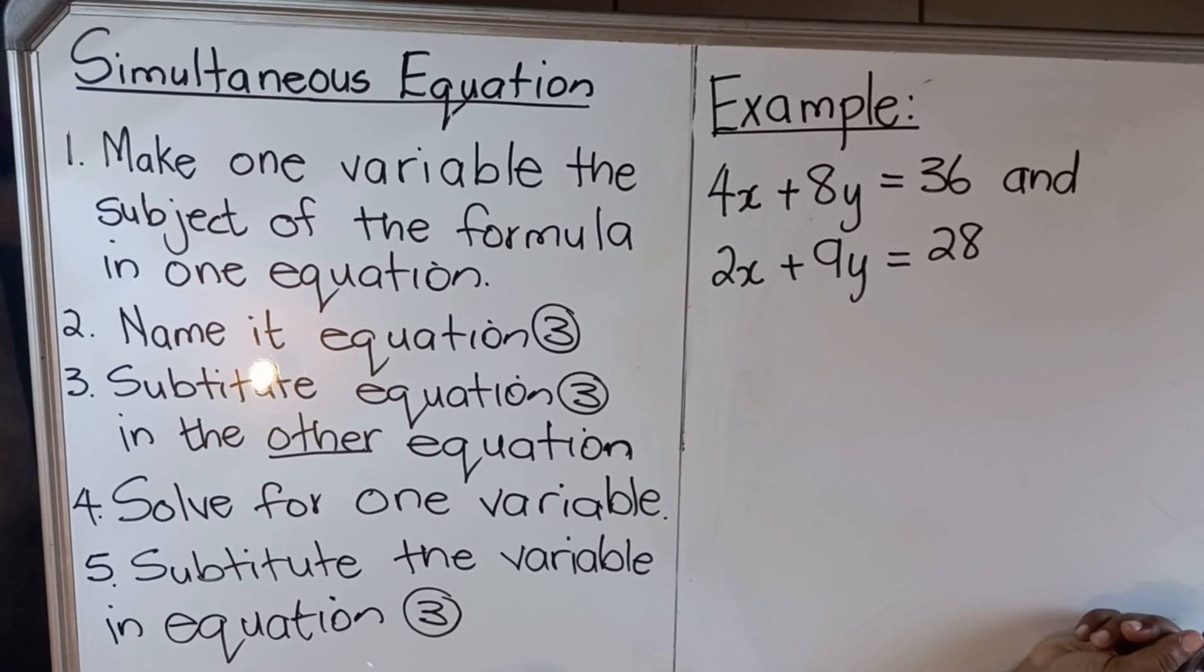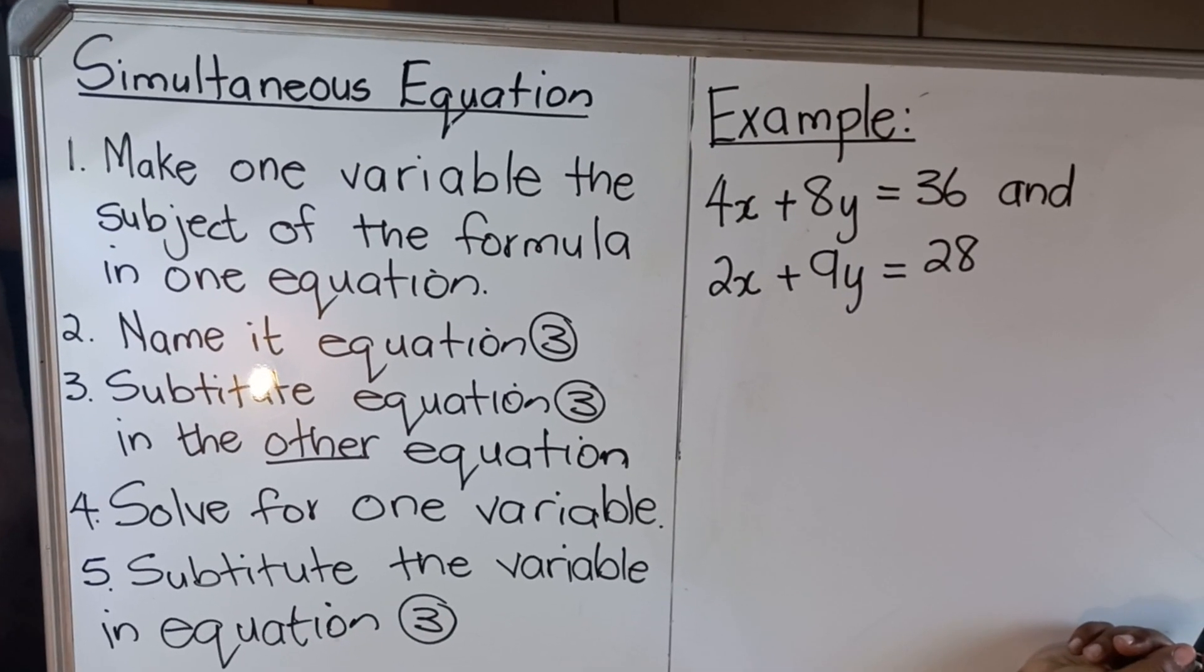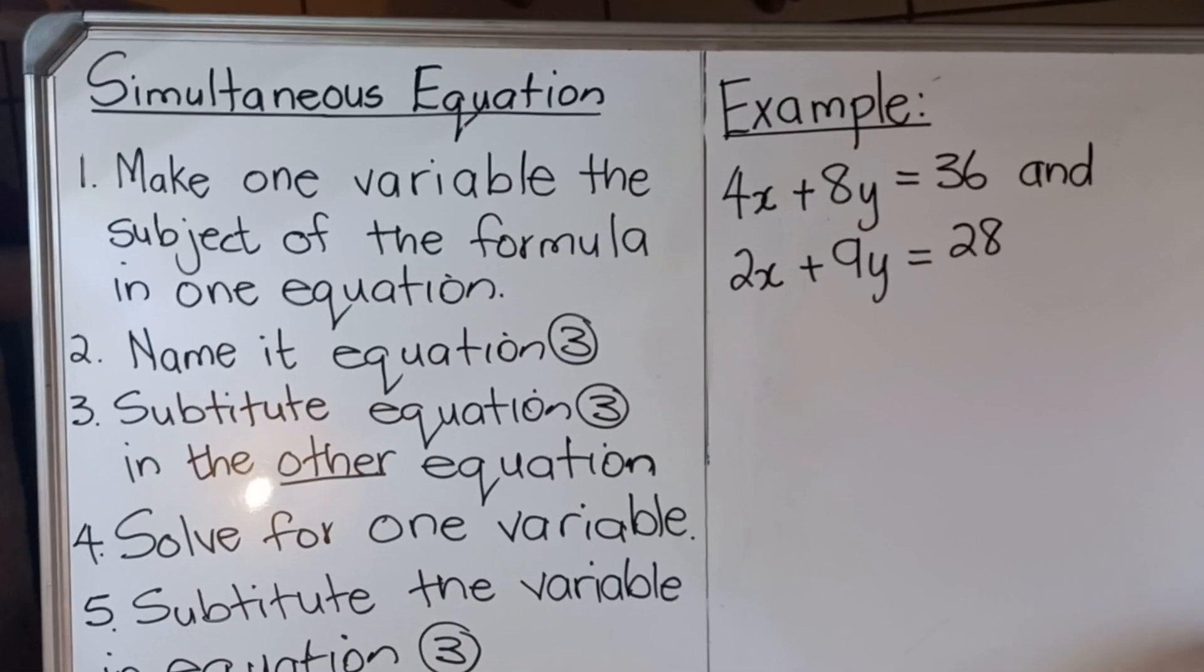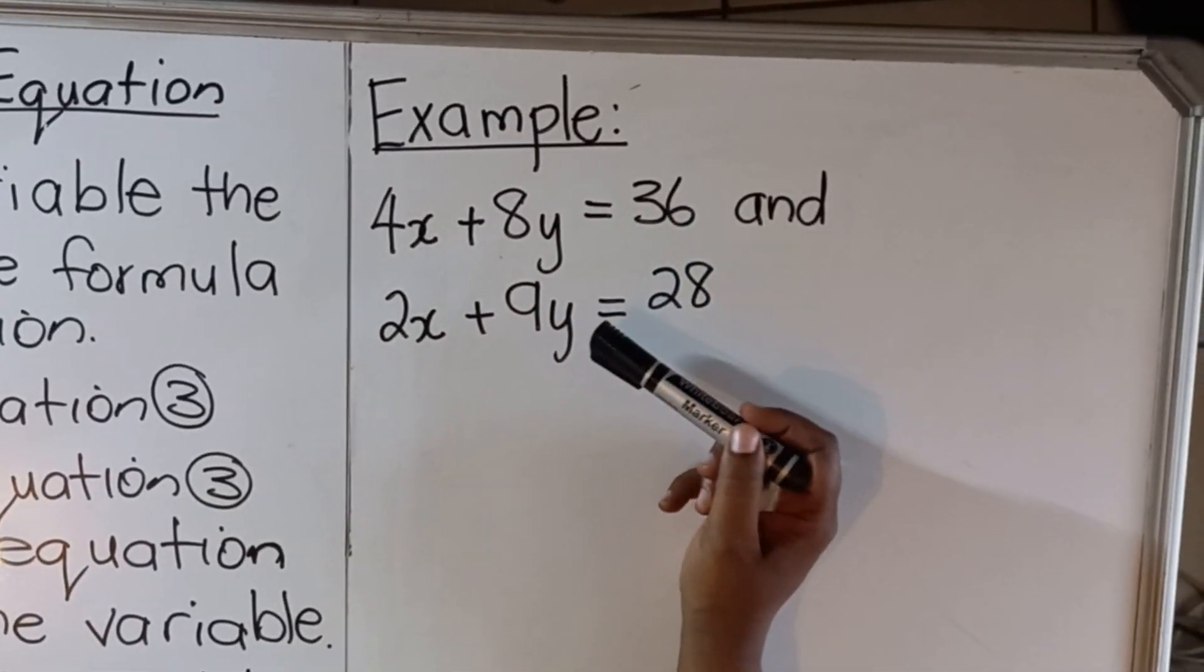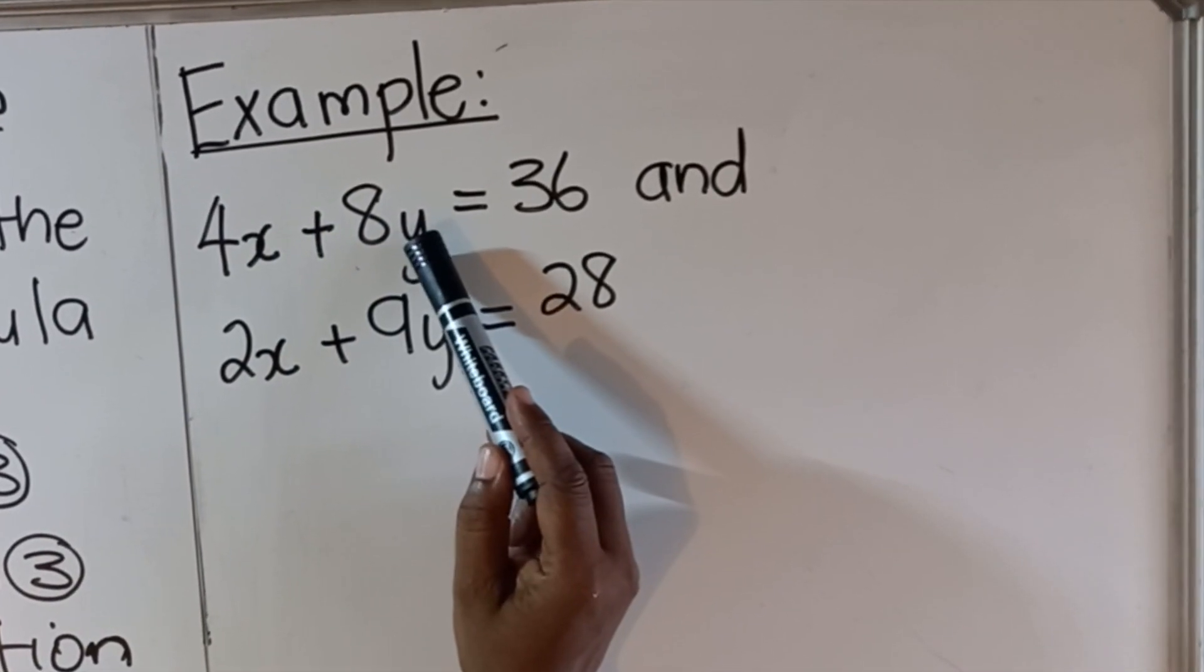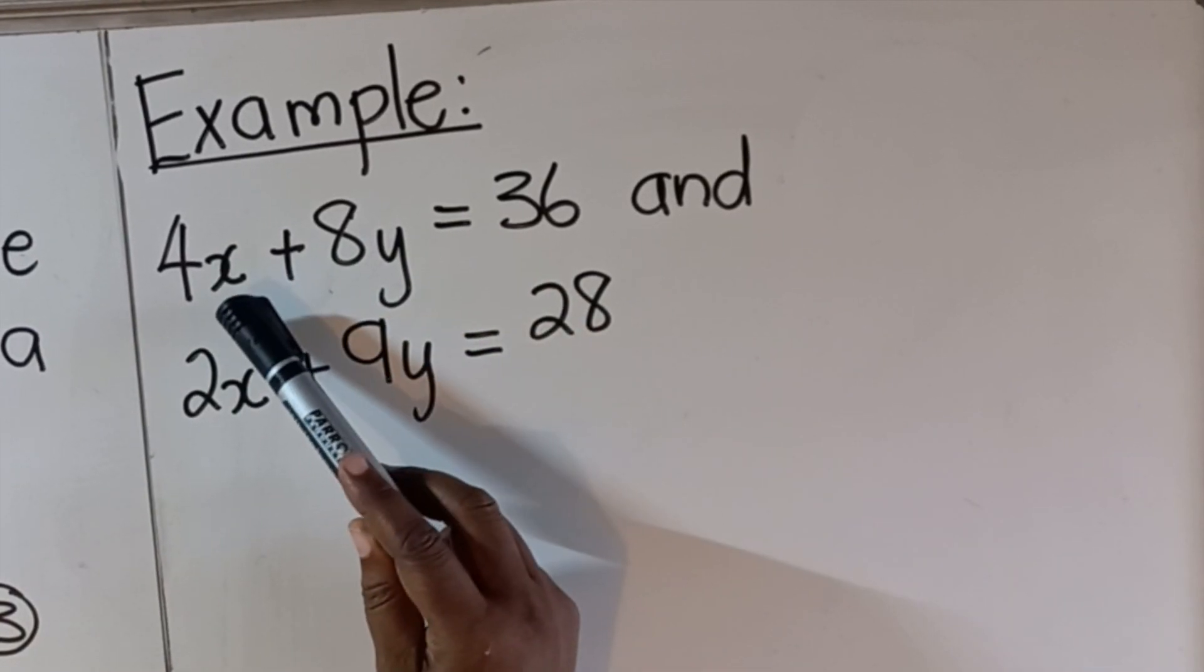We're going to look at an example, but before we look at an example, I'm going to tell you the steps to do substitution with simultaneous equations. You will be given two equations and two unknowns. When you look at these equations, you have an x and a y in this equation and x and y in the other equation.